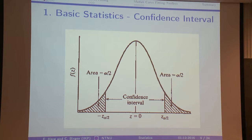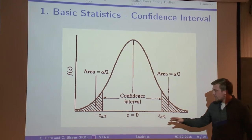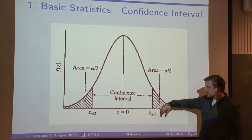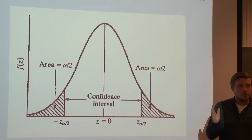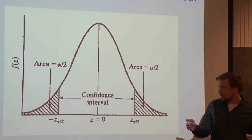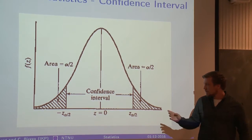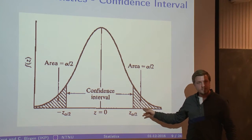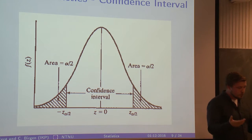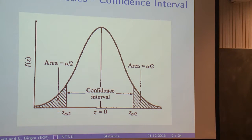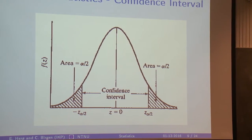Depending on your alpha, you exclude the less likely parts of the distribution. The more sure you want to be that your measurement is within a range, the bigger your C needs to be. But you could also make it smaller and then it would just be less sure. So if it's 95%, 99%, or 90%, you could switch around.